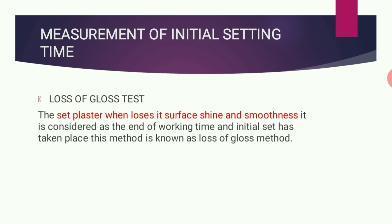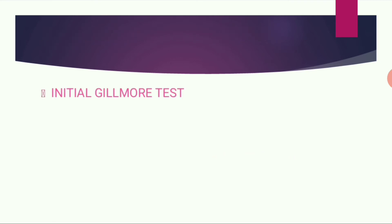How do we measure initial setting time? Using the loss of gloss test: when the set plaster loses its surface shine and smoothness, it is considered that the end of working time has occurred and initial set has taken place. This method is known as the loss of gloss method.